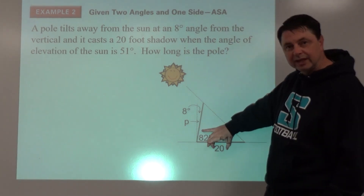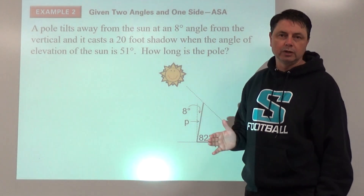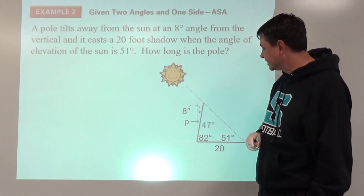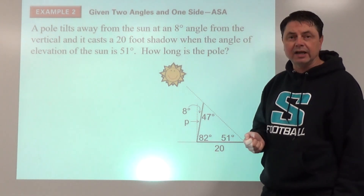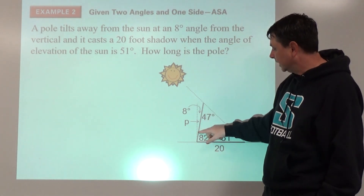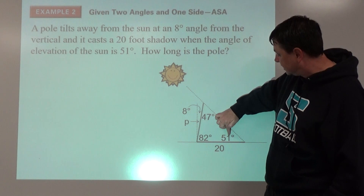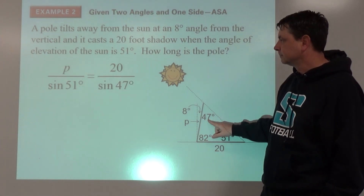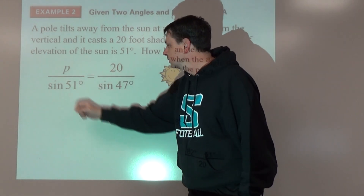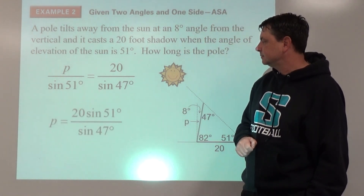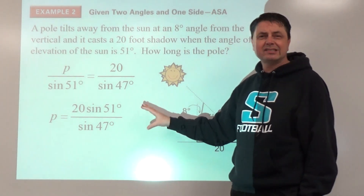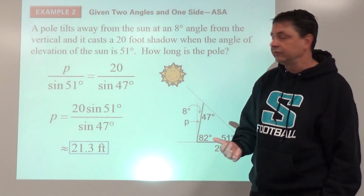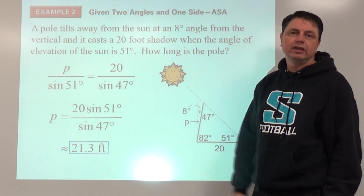Two angles and the side between them — it doesn't matter to our approach. Go after the missing angle first: it's going to be 47°. Then set up the Law of Sines to find the pole length P: P over sine of 51° equals 20 over sine of 47°. Cross multiply and divide both sides by sine of 47°. Since this is an application problem, we'll round to the nearest tenth of a foot rather than two decimal places.